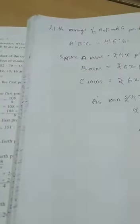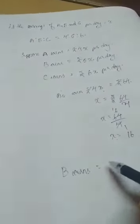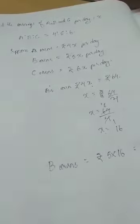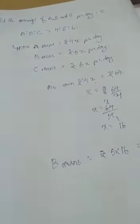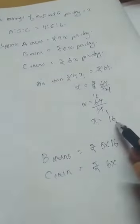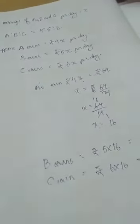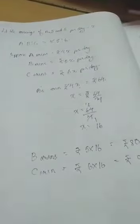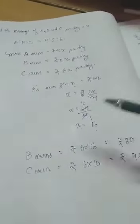Now we can find out automatically B earnings and C earnings. We have already got the value of X. So your B earns will be rupees 5 into X value is 16. So 80, rupees 80 per day. And your C will earn rupees 6X, 6 into X value is 16, so 16 into 6, 96 per day. We will find this way. We will assume first, because we have to find the value of X in this case. Then only we will be able to find the value of B and C earnings.